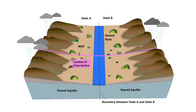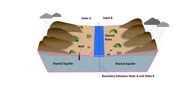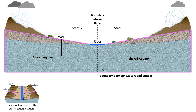Next, we will view a cross section through the well. The cross section, outlined in pink, is revealed by removing the front part of the landscape. Now the view has been rotated so that we can look directly at the cross section.